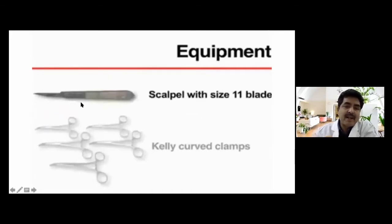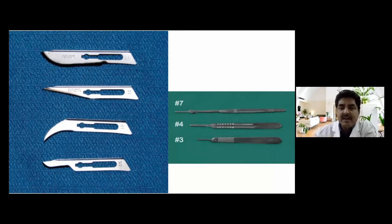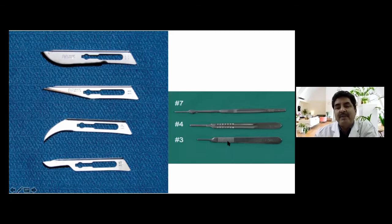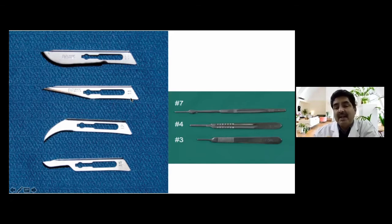You need a scalpel with number 11 blade — the Bard-Parker blade. The number 3 handle fits blades 10, 11, 12, and 15. For chest drain, we use number 11 blade. For the number 4 handle, blades 20, 22, and 24 are used. You must remember: number 3 handle goes with blades 10, 11, 12, and 15.